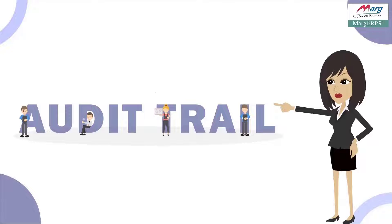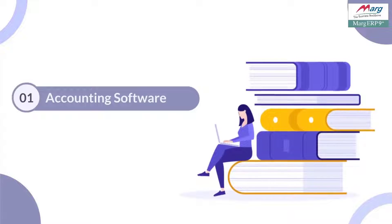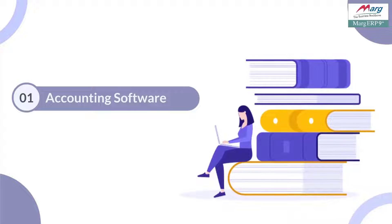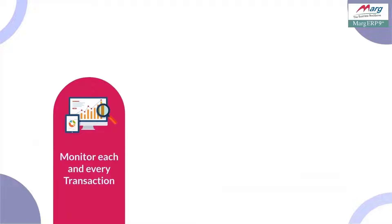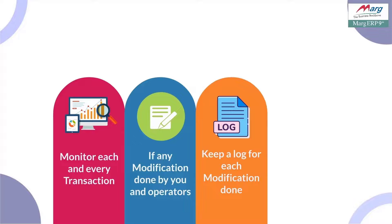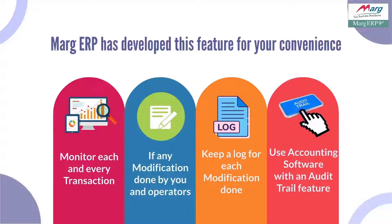As you already know, it is mandatory by the government that companies which use accounting software for maintaining their books of accounts should use software that includes an audit trail feature, so that you can check each and every transaction. If you or your operators have done any modification, you should have a log of every modification. This option has been developed in Mark ERP software for your convenience.